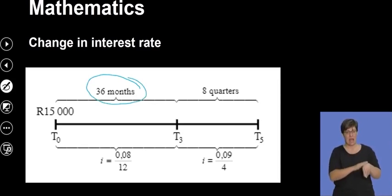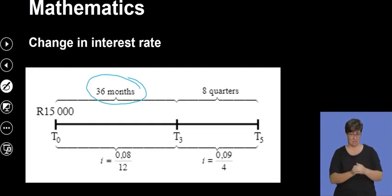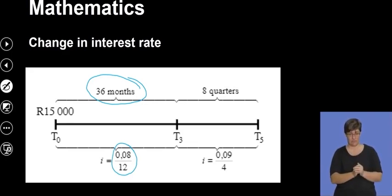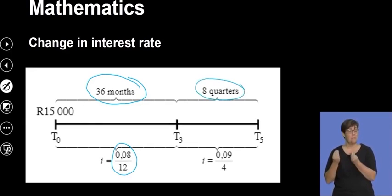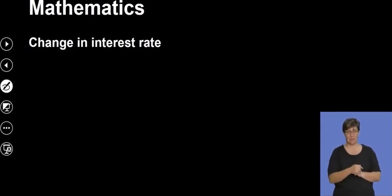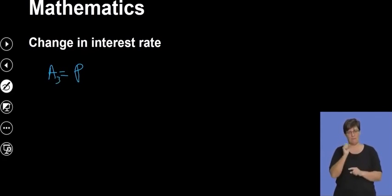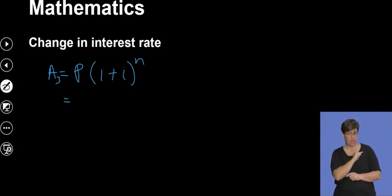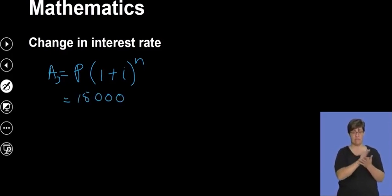Looking at the number line: n is the number of times the person receives interest. Between t0 and t3, Sbuseso is getting interest 36 times — that's 36 months — at a rate of 0.08 ÷ 12. For the remainder of the investment, he receives interest for eight quarters — because two years has eight quarters — at a rate of 0.09 ÷ 4.